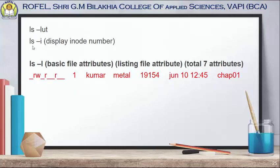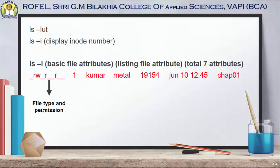You can also combine these as ls -lut all together. ls -i is specially used for displaying the inode number. ls -l is very important because it shows the basic file attributes — it displays seven attributes in total. The first attribute shows the file type and permissions, like dash-rw-dash-r-dash-dash-r-dash-dash.